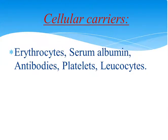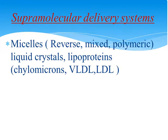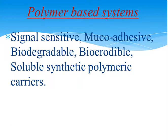Next are the cellular carriers, which include erythrocytes, serum albumin, antibodies, platelets and leukocytes. Next are supramolecular delivery systems, which include micelles, reverse, mixed and polymeric micelles, liquid crystals and lipoproteins such as chylomicrons, very low density lipoproteins (VLDL) and low density lipoproteins (LDL).